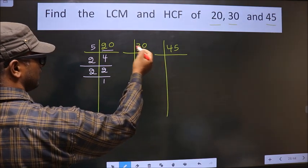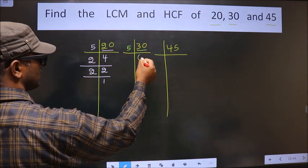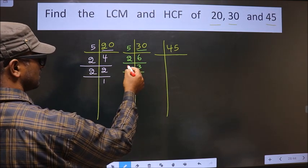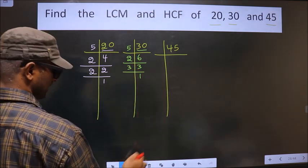Now here we have 30. 30 is 5, 6, 30. Now 6 is 2, 3 is 6. Now 3 is a prime number, so we take 3, 1 is 3.